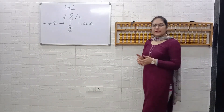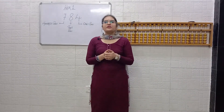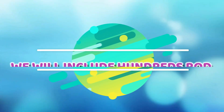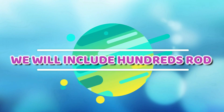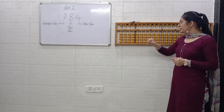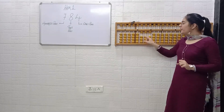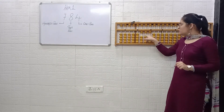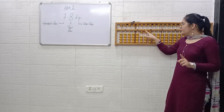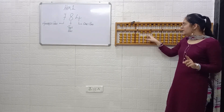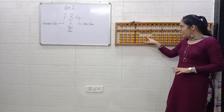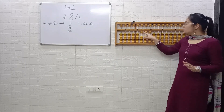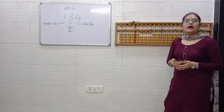I hope it's clear till here. Now we will be including the hundreds rod as well. We will read hundreds place, then tens, then ones. Here it is 1 at hundreds place — keep that in your mind. At tens place, again it's 1. At ones place, that is also 1. So 1, 1, 1 — it's 111.